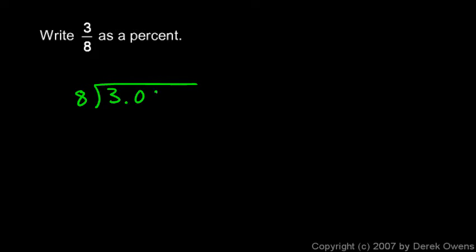Now 8 doesn't go into 3, so I'm going to have a 0 up here and my decimal point is right up there. And then does 8 go into 30? Yes, 8 goes into 3 three times. 3 times 8 is 24. I subtract and I get 6, and then I bring down this 0.